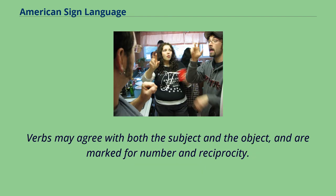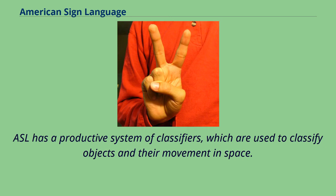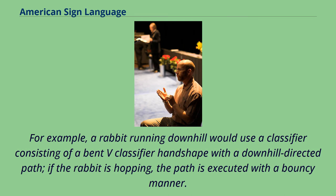Verbs may agree with both the subject and the object, and are marked for number and reciprocity. Reciprocity is indicated by using two one-handed signs; for example, the sign 'shoot,' made with an L-shaped handshape with inward movement of the thumb, is inflected to 'shoot reciprocal,' articulated by having two L-shaped hands shooting at each other. ASL has a productive system of classifiers, which are used to classify objects and their movement in space. For example, a rabbit running downhill would use a classifier consisting of a bent V classifier handshape with a downhill directed path.